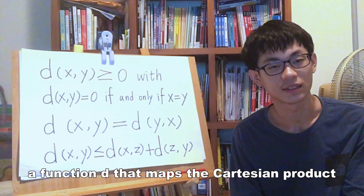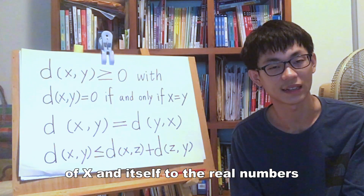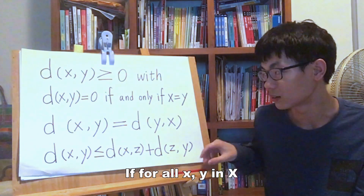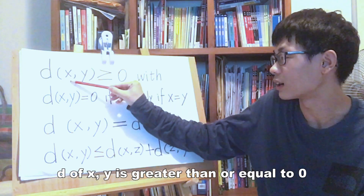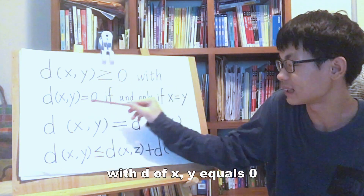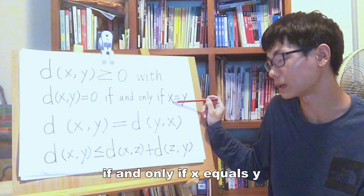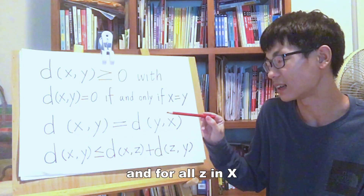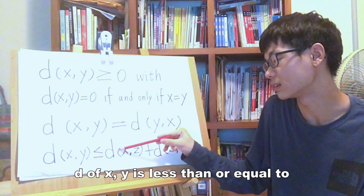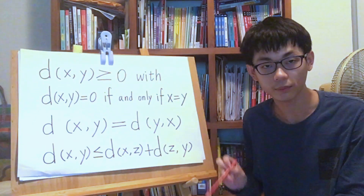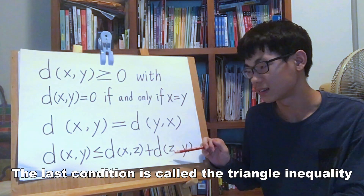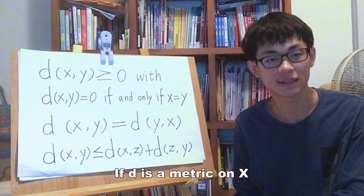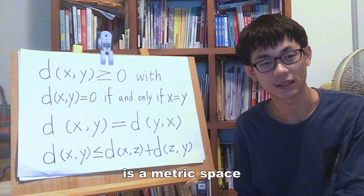Given a set X, the function d that maps the Cartesian product of X with itself to the real numbers is a metric on X if for all x, y in X: d(x,y) is greater than or equal to 0; d(x,y) equals 0 if and only if x equals y; d(x,y) equals d(y,x); and for all z in X, d(x,y) is less than or equal to d(x,z) plus d(z,y). This last condition is called the triangle inequality. If d is a metric on X, then the ordered pair (X, d) is a metric space.